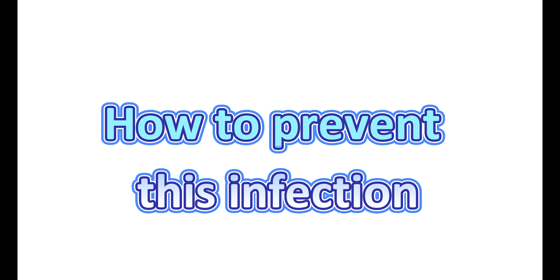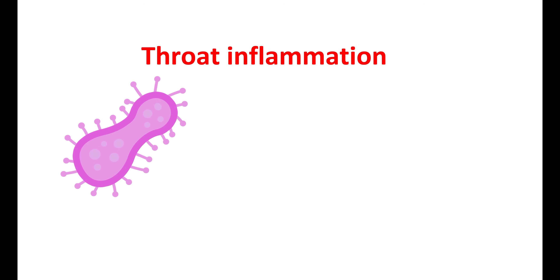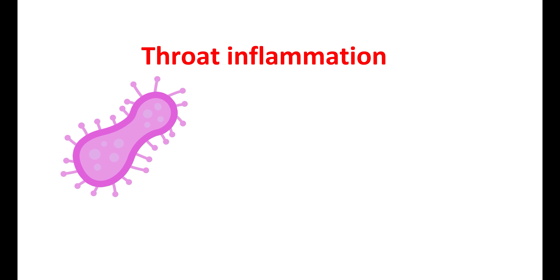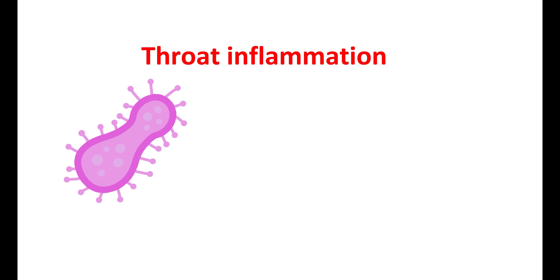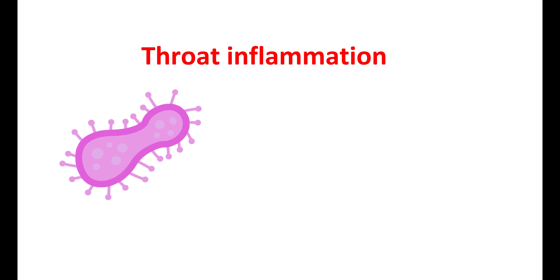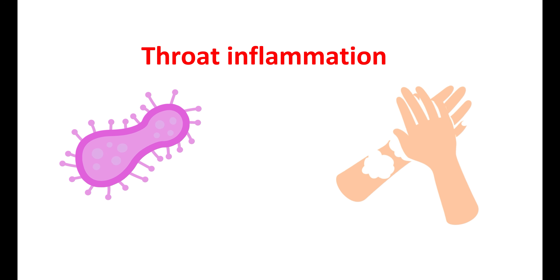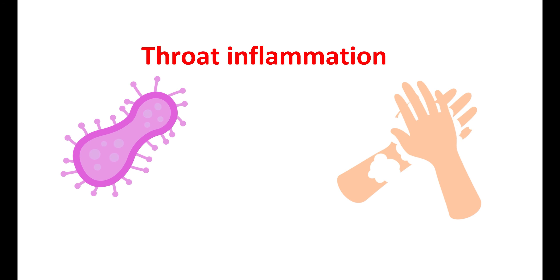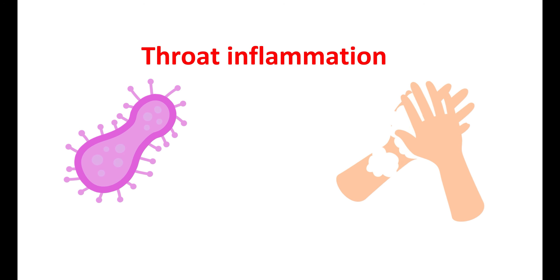This bacterial infection may develop throat inflammation, which produces pain during swallowing. It is caused by bacteria called beta hemolytic streptococcus. It can spread through respiratory droplets after coughing or sneezing, and also by touching contaminated surfaces. Maintaining sufficient hygiene can prevent further deterioration of this condition; therefore, you should wash your hands with soap and water every time you sneeze or cough, which can prevent the spread of the bacteria.